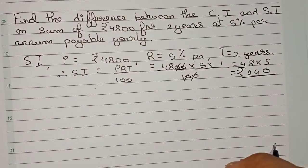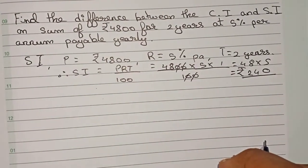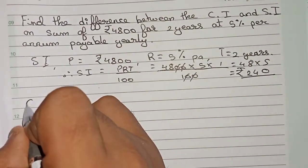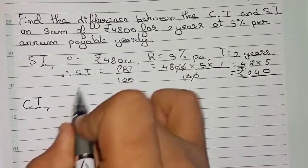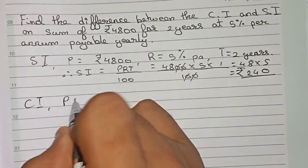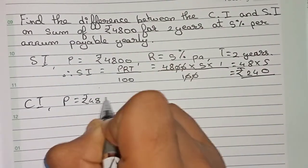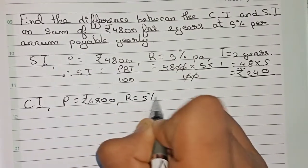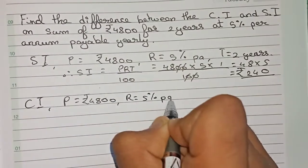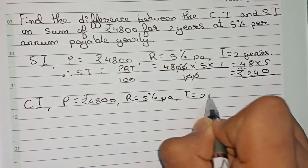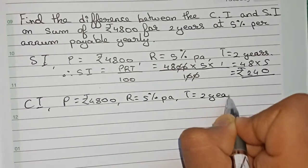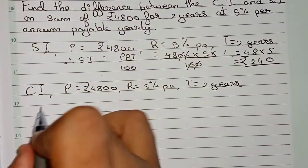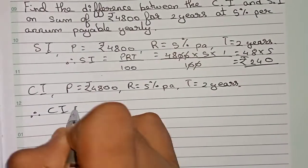Now I have to find the compound interest. For compound interest, the values will be the same: principal is four thousand eight hundred, rate is five percent per annum, and time is two years.